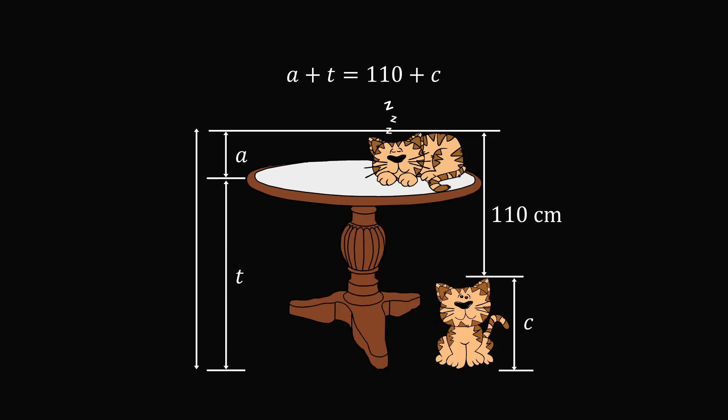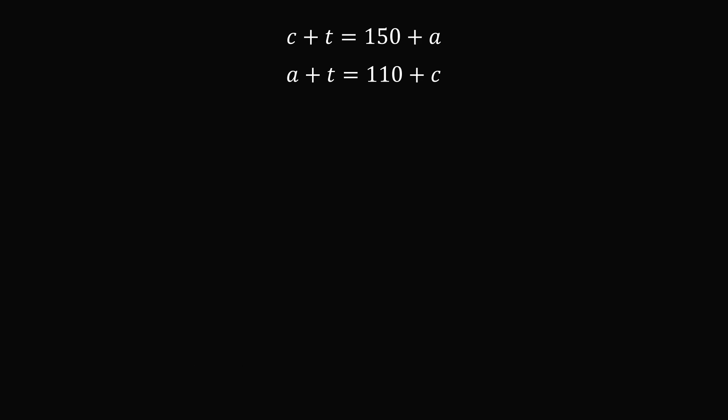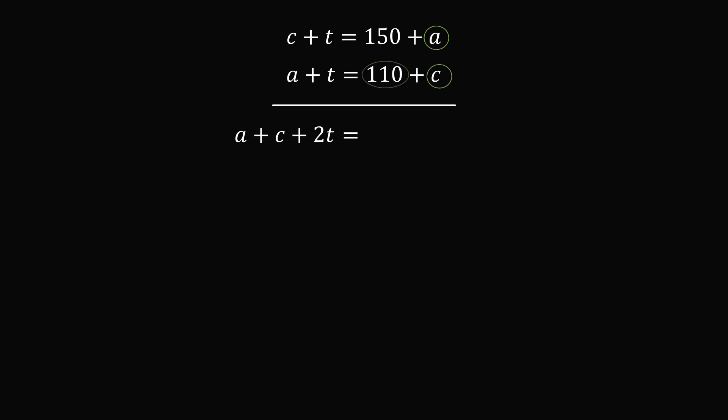So let's put the two equations together. We have three variables c, a, and t, but only two equations — so in general we may not be able to solve for each variable. But in this problem, we only need to solve for t, the height of the table. There's a nice little trick: we can add the two equations together. On the left side we get a + c + 2t, and on the right side we get a + c + 110 + 150.